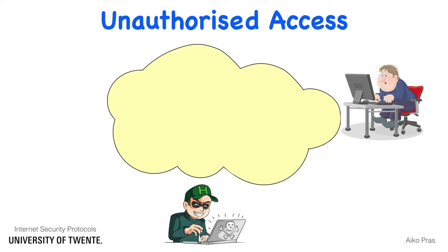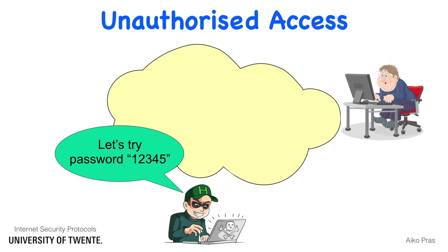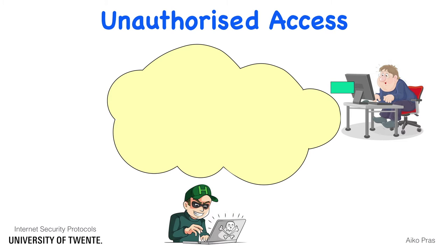To get access, the attacker may try to brute force Bob's password. Assume the attacker first tries password 12345. The login attempt is sent to Bob, but since 12345 is not the correct password, Bob's system reacts with an error message. After reception of this error message, the attacker knows that password 12345 doesn't work.